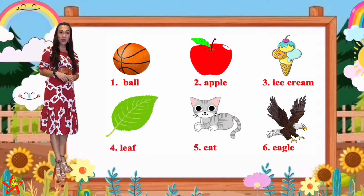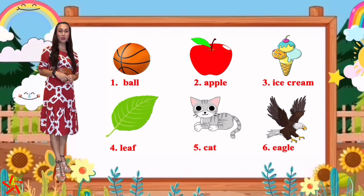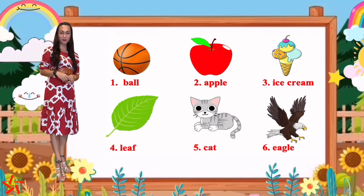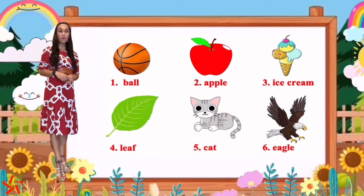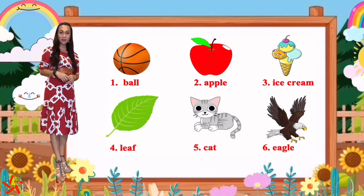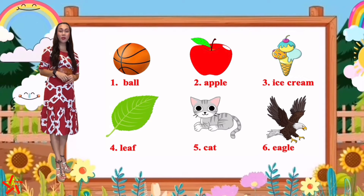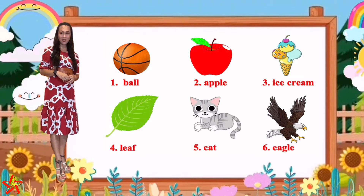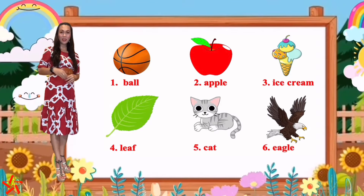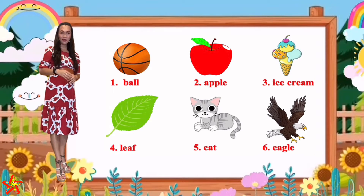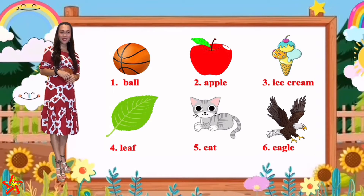Teacher Isa will read and I would like you to read by yourself after: ball, apple, ice cream, leaf, cat, eagle. Can you read that? Very good.